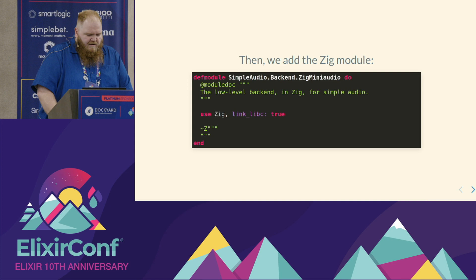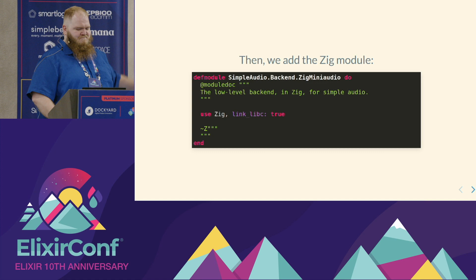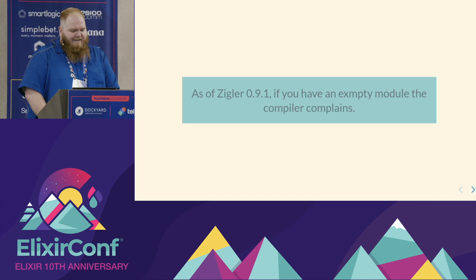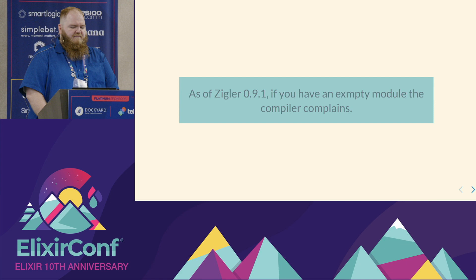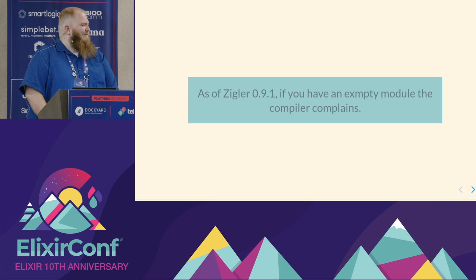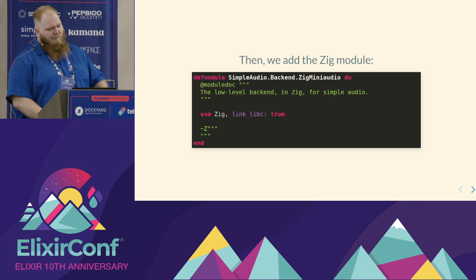Then we're going to stub in our Zig module. As of Ziggler 0.9.1, if you have an empty module, the compiler will complain and say, hey, you promised me Zig, there's no Zig. We'll give it some more Zig and it'll cheer up.